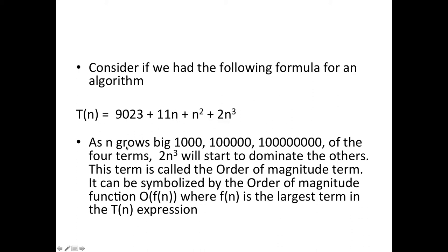So as n grows big, of these four terms the only one that grows really really fastest is this one here. So we say this algorithm is n cubed - that's how fast it is. This is called the order of magnitude.